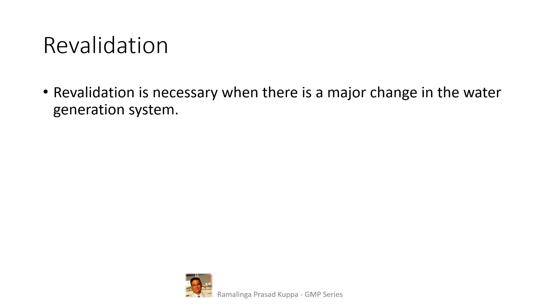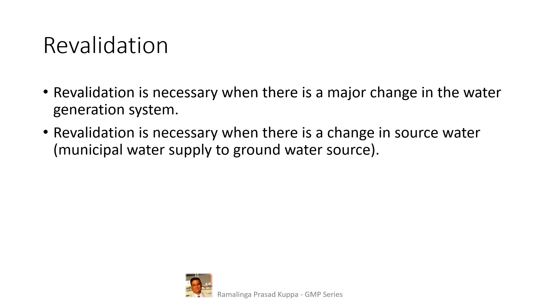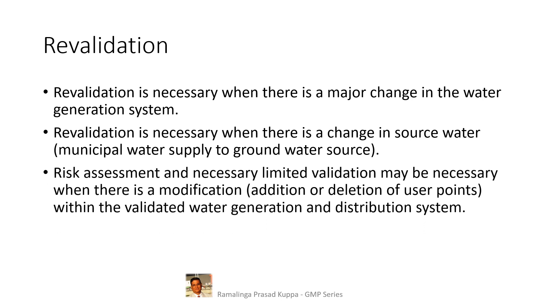Let us see the conditions for revalidation of water generation and distribution systems. Revalidation is necessary when there is a major change in the water generation and distribution system — this is a general rule — to establish that any change has no adverse impact on the validated status of the system. As discussed earlier, the source water has significant impact on the validated status of the water system. Risk assessment and necessary limited validation may be necessary when there is a modification, addition, or deletion of user points within the validated water generation and distribution system.